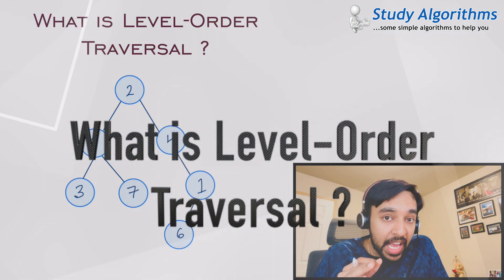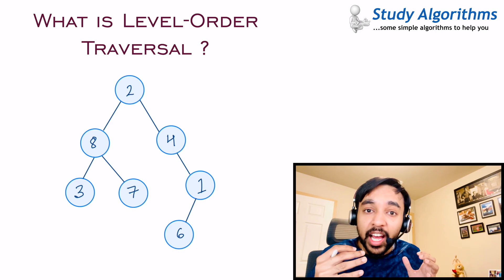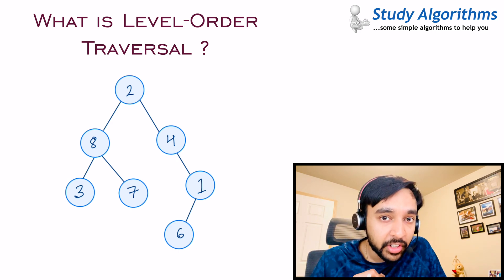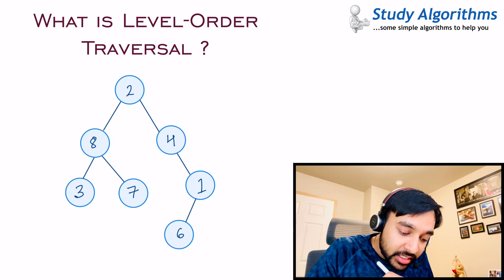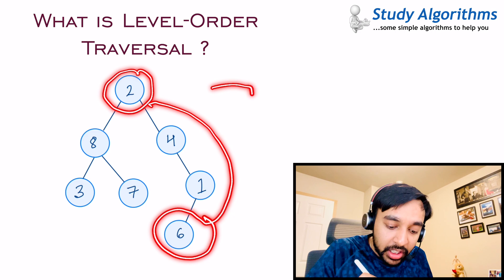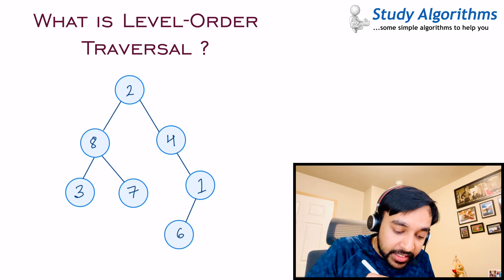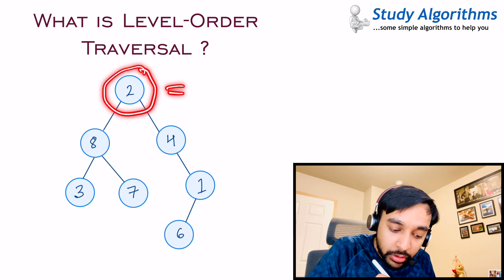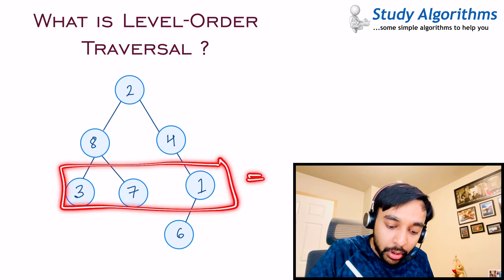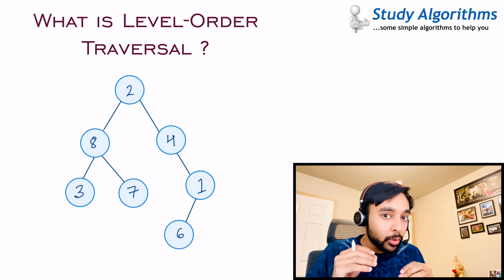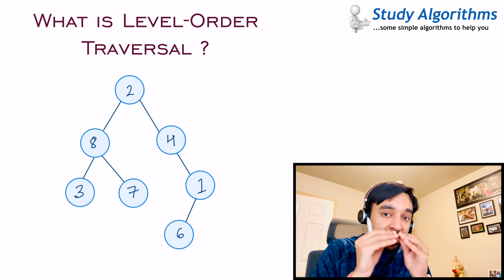You have this tree in front of you and you want to perform a level order traversal. The first question that should come to your mind is: what are actually levels in a binary tree? The depth of a binary tree is defined as the distance between the root node to the deepest node in the tree. The depth of the root node is always equal to 0. The depth of the next two nodes would be equal to 1, and the depth of the next three nodes equals 2. In a way, these are also the levels of a tree.